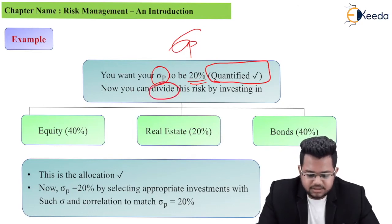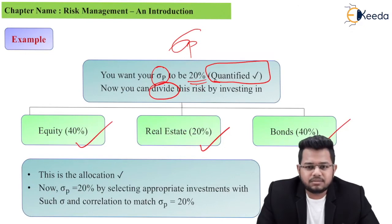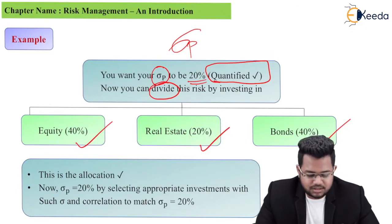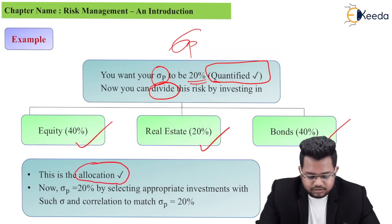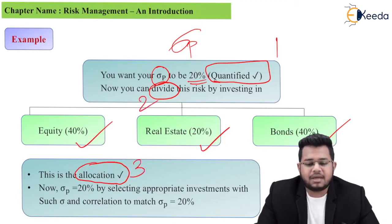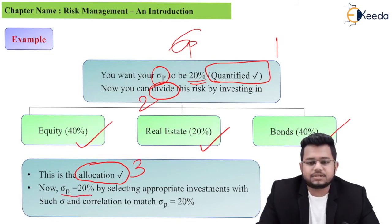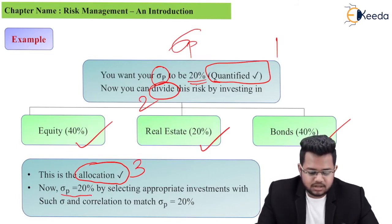Now you can divide this risk by investing — for example, put 40% in equity, 20% in real estate, 20% in bonds. These are just examples, but what you are trying to do is allocate this risk. This is known as allocation. So three steps: first step — quantify; second step — divide; third step — allocation.